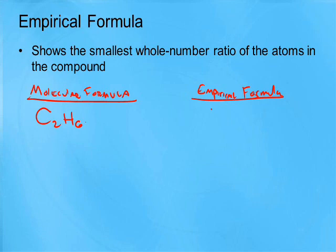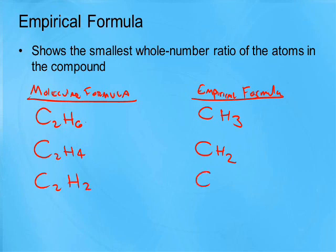But the empirical formula here would be CH3. Ethene would be CH2. And then there is ethyne, that would just be CH for the empirical formula.